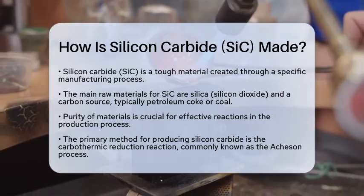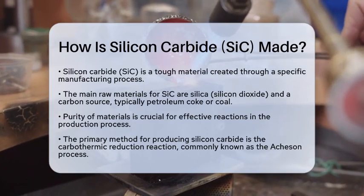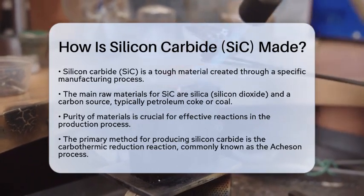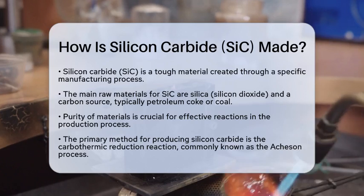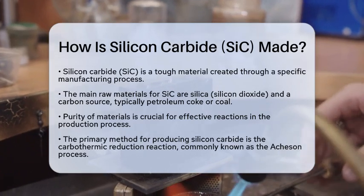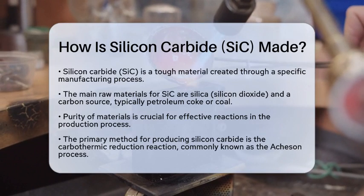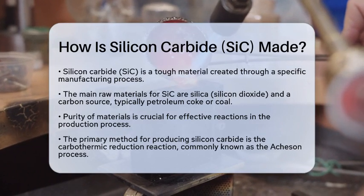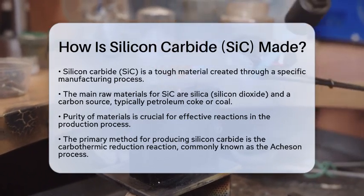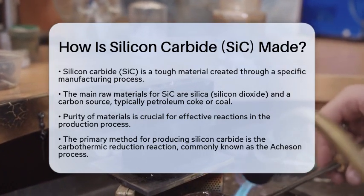First, we need to gather the raw materials. The main ingredients for making silicon carbide are silica, which is silicon dioxide, and a carbon source. Common choices for the carbon source are petroleum coke or coal. These materials are selected for their purity and ability to react effectively.